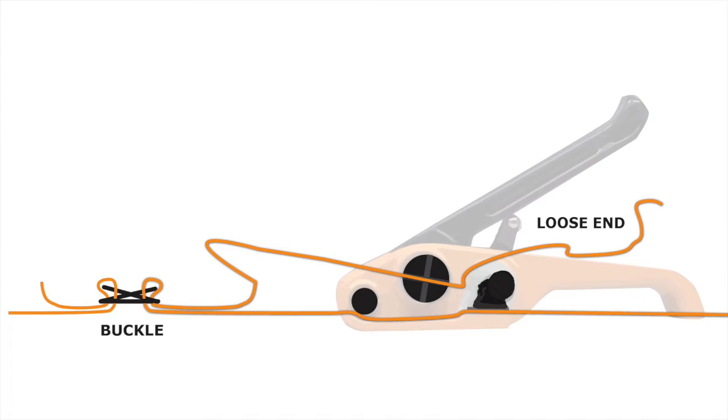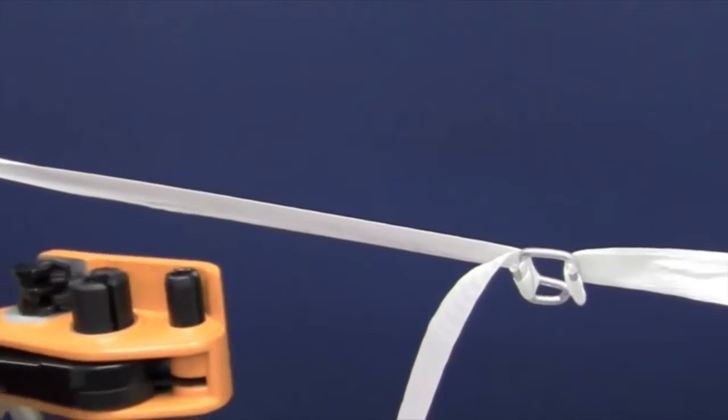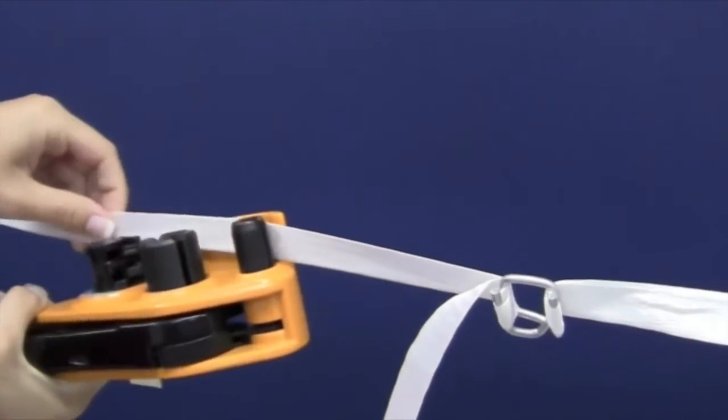Now loop the loose end of your strap through the tension knob and begin to ratchet your tension handle to tighten your strap. You will see how this entire process works by a demonstration here.